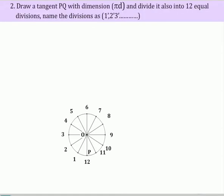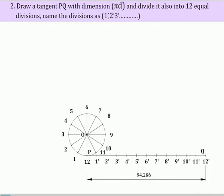Draw a tangent PQ with dimension Pi D and divide it also into 12 equal divisions. Name the divisions as 1 dash, 2 dash, 3 dash, etc.